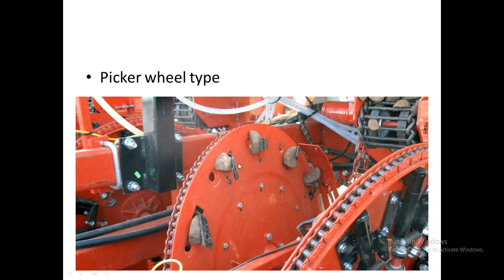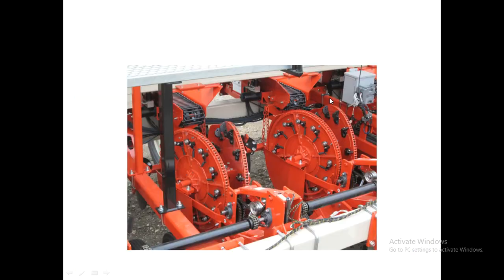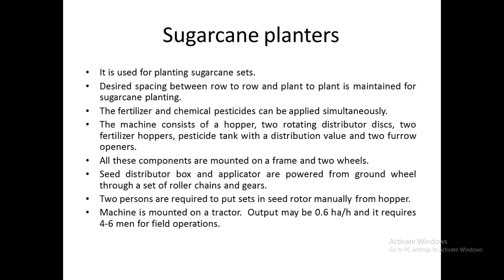In the automatic potato planter, the cup type seed metering mechanism is used. The picker wheels hold potato seeds between the plates. As the plate rotates downward, the metal component holding the potato loosens and the seed falls into the ground.